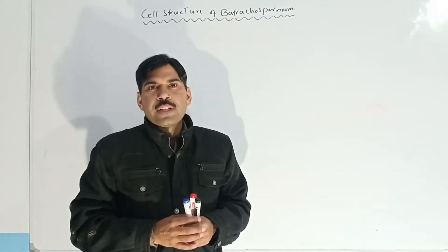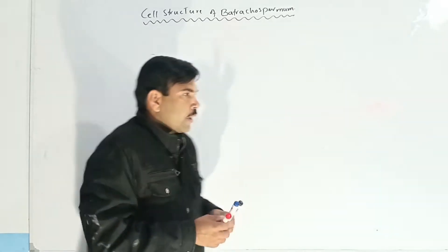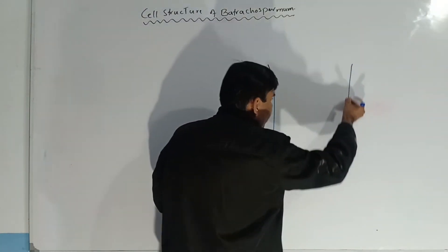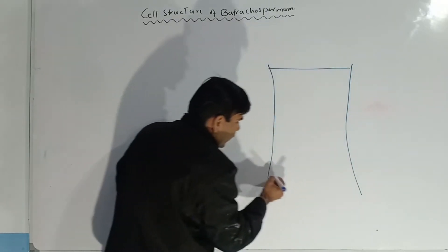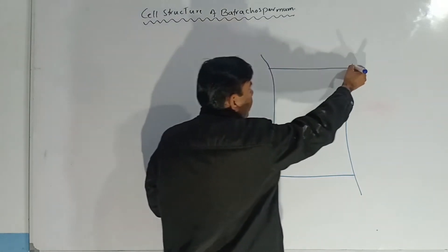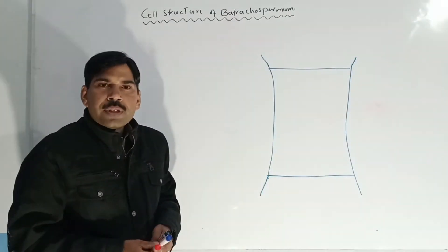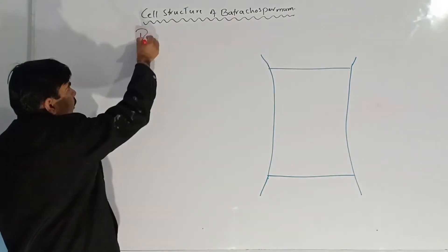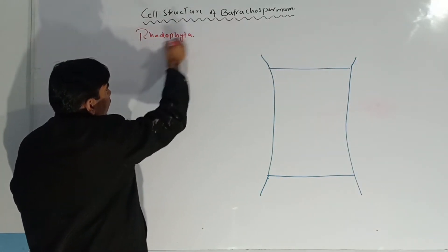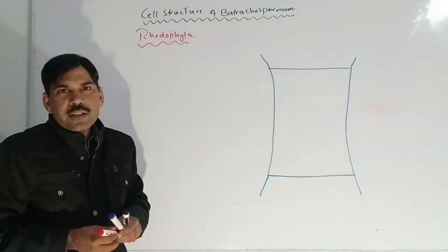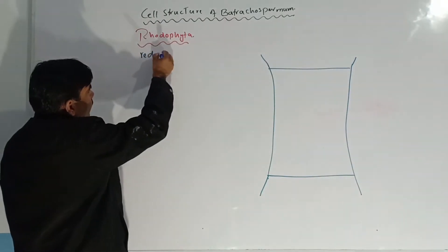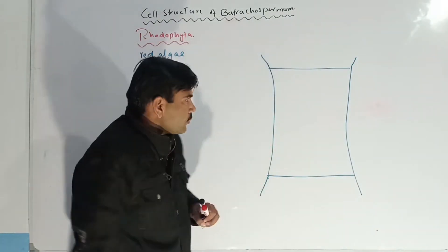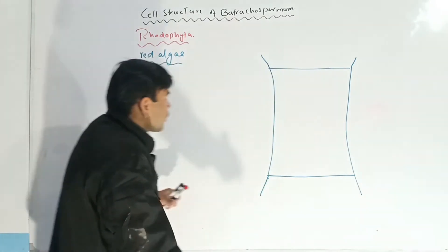Assalamu alaikum students, today we are going to study about the cell structure of Batrachospermium. We are going to discuss about red algae. Batrachospermium belongs to the division Rhodophyta, and the members of this division are known as red algae. So this is a cell of Batrachospermium which is a red alga.